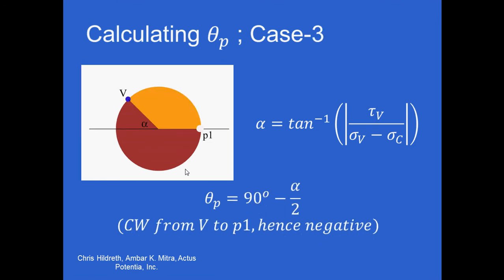You'll also find that sometimes this angle on the circle going from the vertical point towards sigma p1 is more than 90 degrees. In that case, this same equation now solves for the complement to that, and because of that, the equation at the very end to find theta p changes slightly, where you have to subtract alpha divided by 2 from 90 degrees.